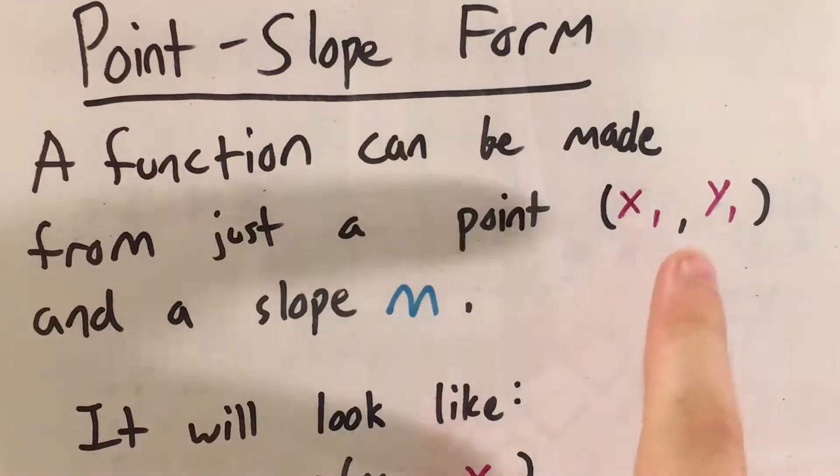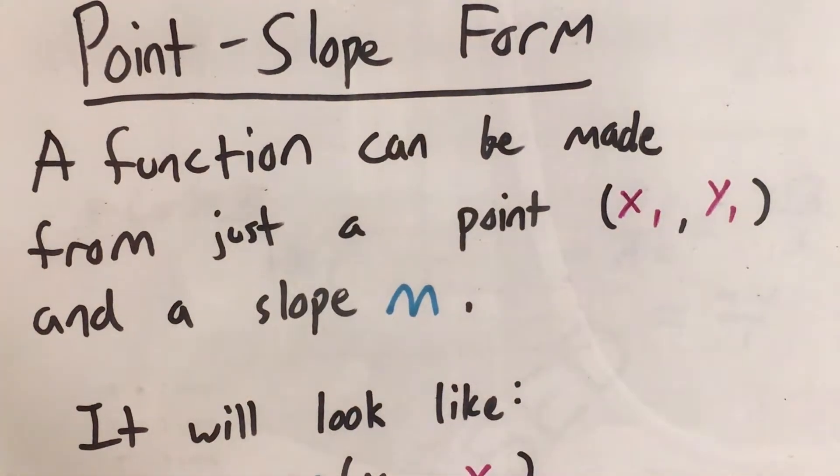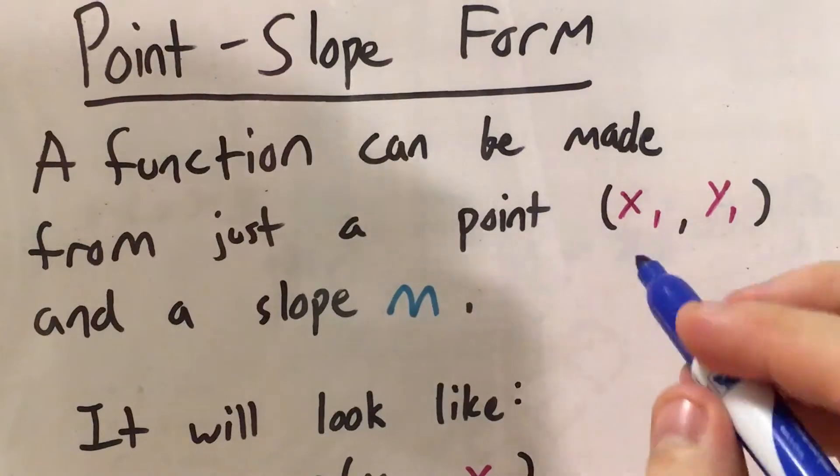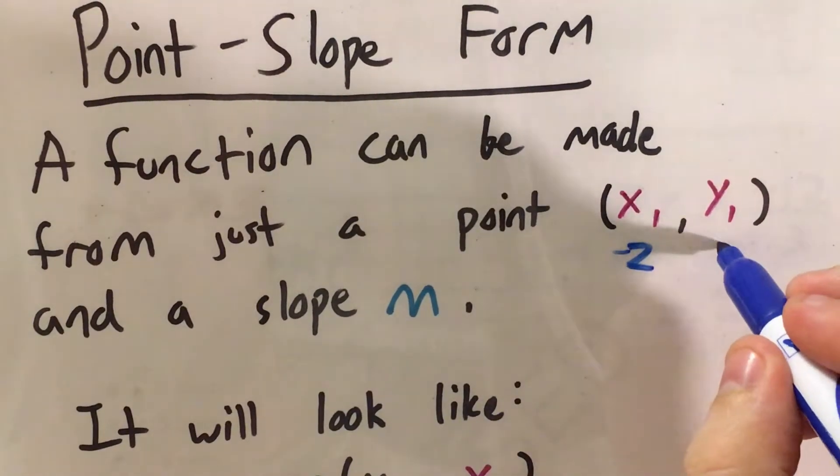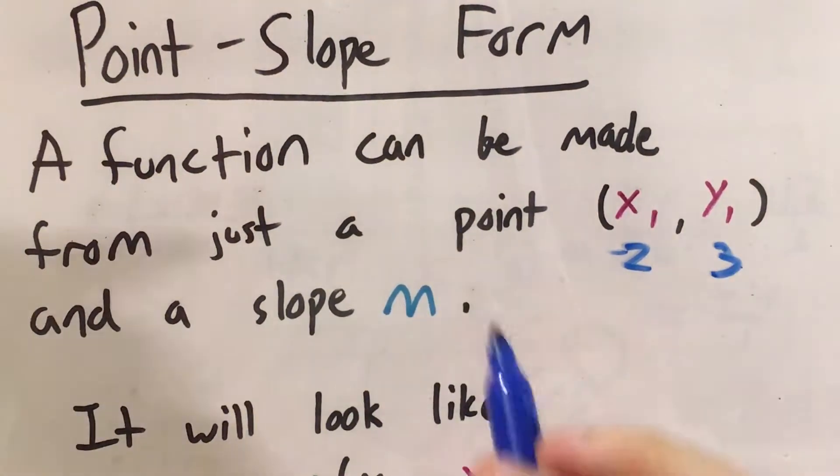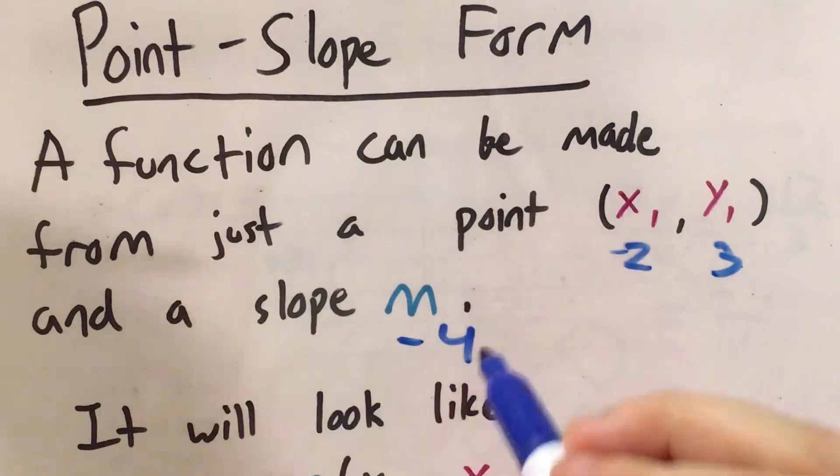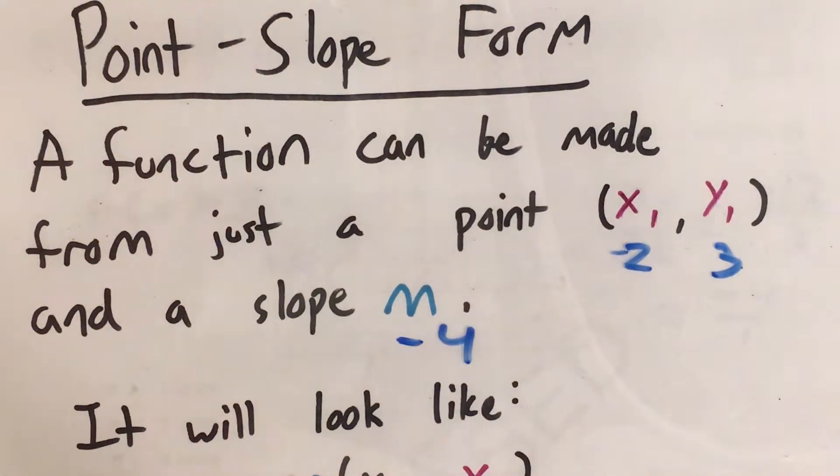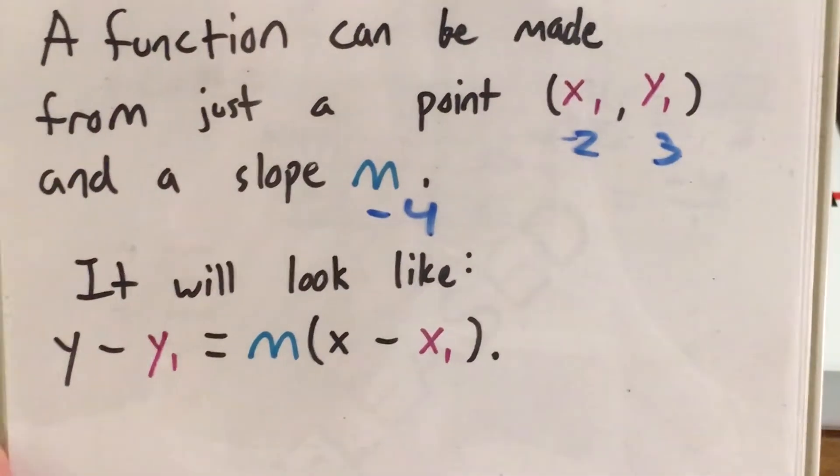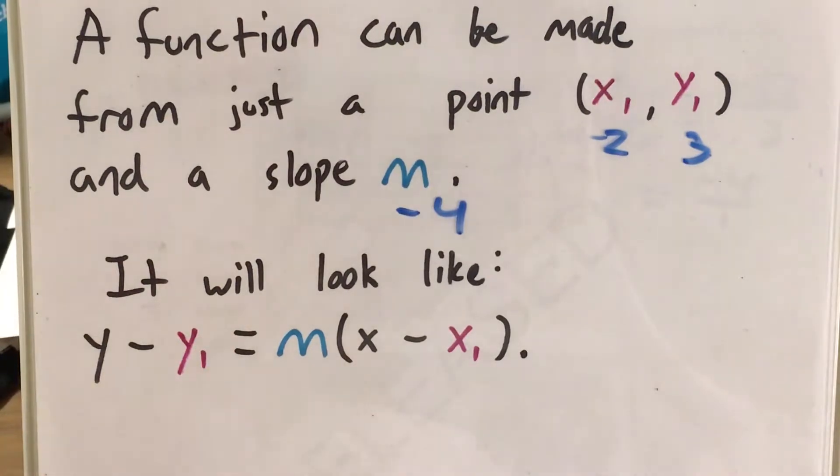Point-slope form is when we have just a point and a slope. If our point is (-2, 3) and our slope is -4, I can plug all of that into the formula and use it to figure out our y-intercept.